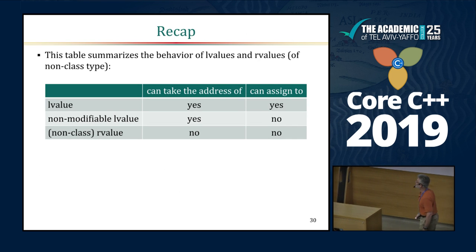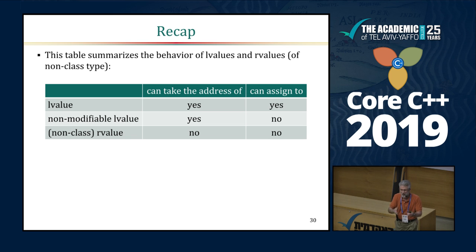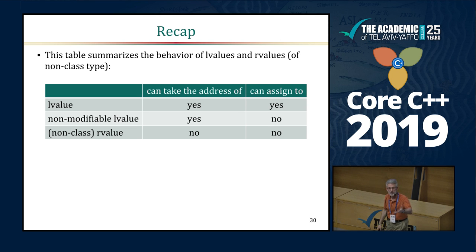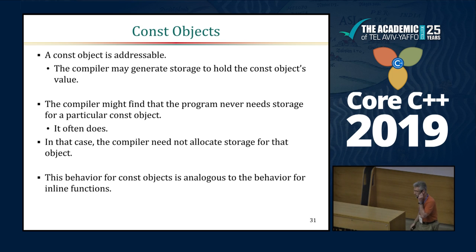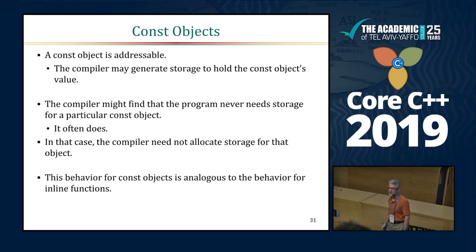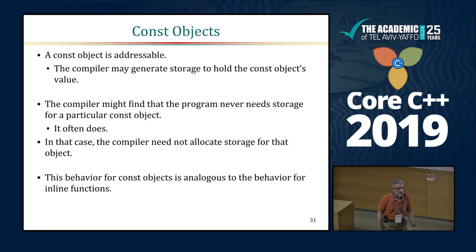Here's a summary: an L-value is an object that takes up storage — you can point to it and store into it. R-values are in a sense vaporous — they don't necessarily take up storage, so you can't store into them and you can't point to them. Non-modifiable L-values are in an in-between state: they do conceptually take up storage, but because they're const you can't store into them.